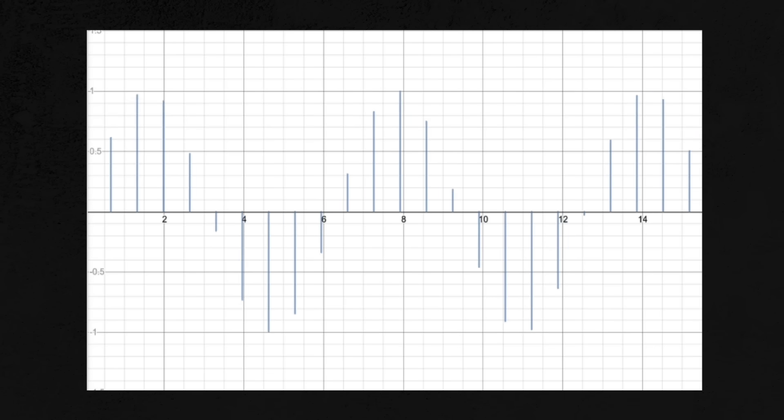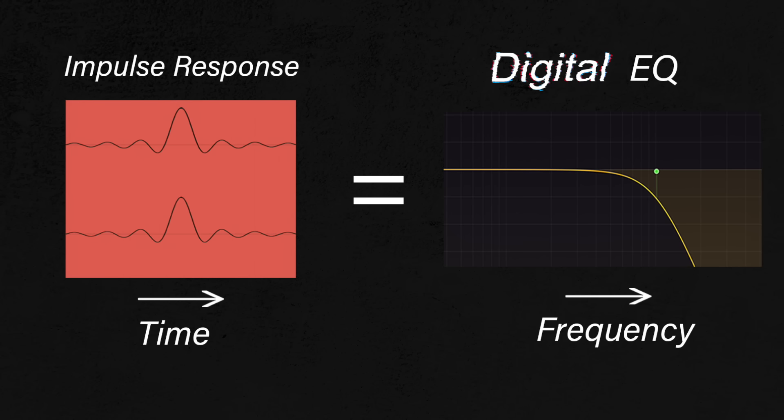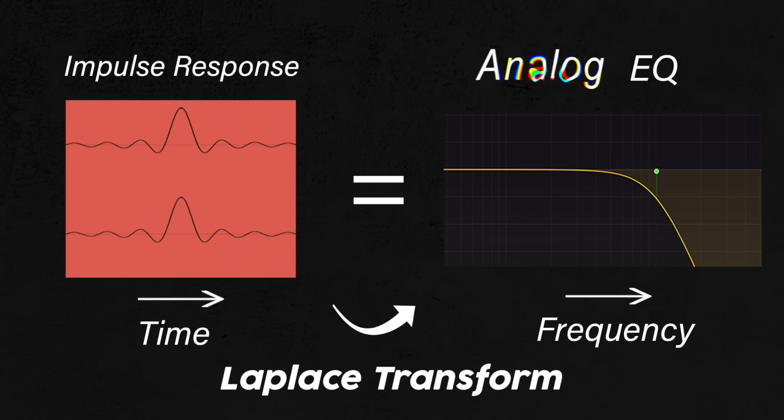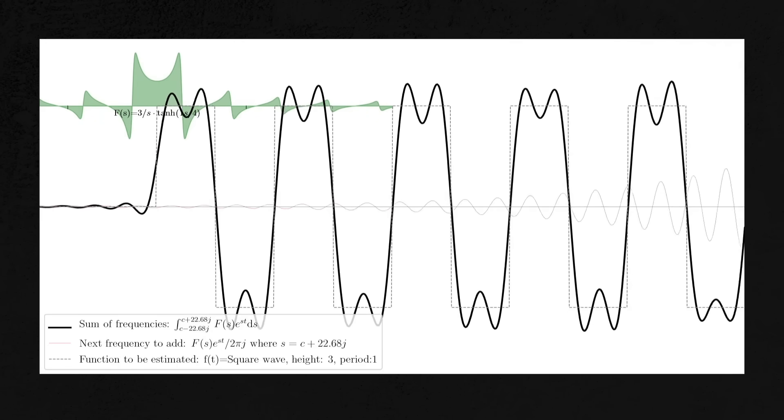I said I'd only talk about digital EQs, but let's talk about analog for a second. An analog EQ is basically a digital EQ with an infinite sampling rate, so time is treated as a continuous quantity rather than chopped up into samples. In the same way that a digital EQ curve is given by the Fourier transform of its impulse response, an analog EQ curve is given by the Laplace transform of its impulse response. The Laplace transform is more complicated than the Fourier transform, but you can think of it as a Fourier transform for a frequency distribution that changes over time, and it contributes to that warm sound we associate with analog.